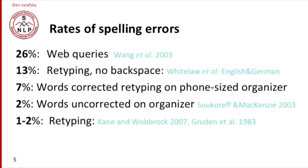How common are spelling errors? It depends a lot on the task. In web queries, spelling errors are extremely common — practically one in four words in a web query are likely to be misspelled. In word processing tasks or on phones, it's much harder to get an accurate number. Most studies are done by retyping: you give the user a passage to type and measure how well they type it, which is not quite the same as users naturally writing. If you ask users to retype without the backspace key, about 13% of the words are in error.